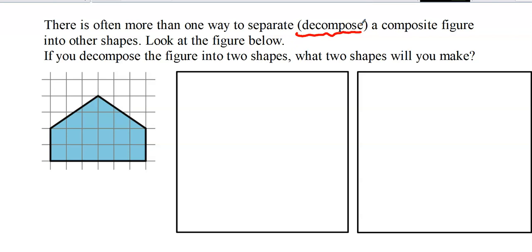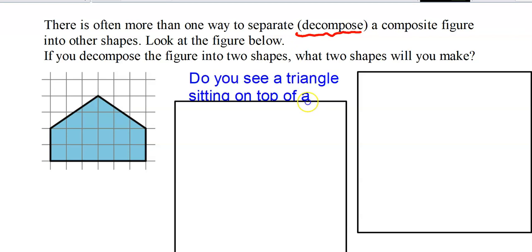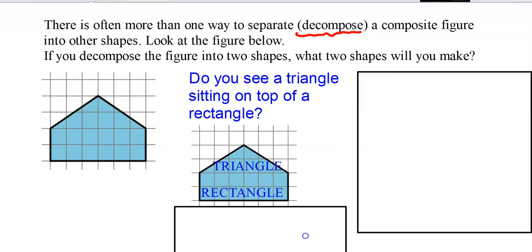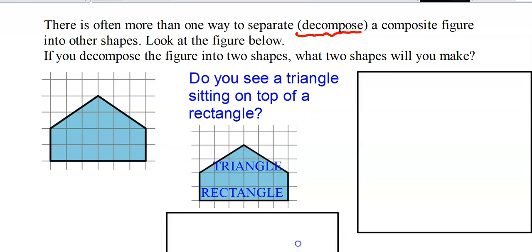If you compose something you are making a whole thing; if you decompose, that's where you're taking it apart. Think about if you decompose the figure into two shapes — what shapes could you make? One potential idea is that you see a triangle sitting on top of a rectangle.